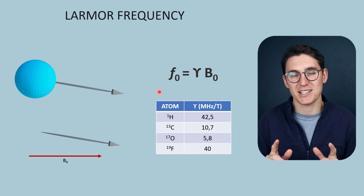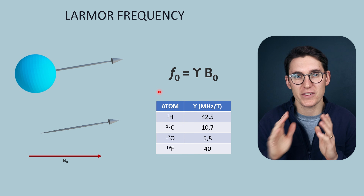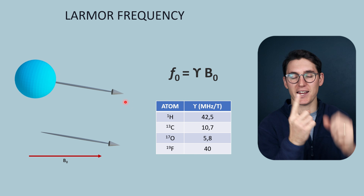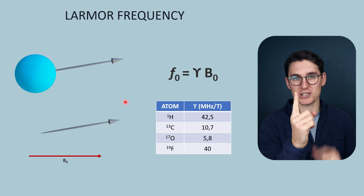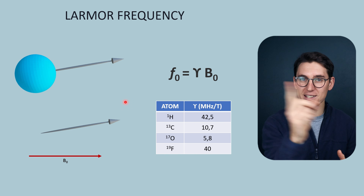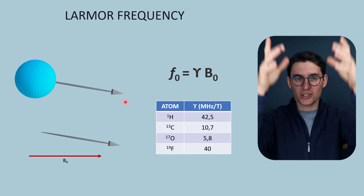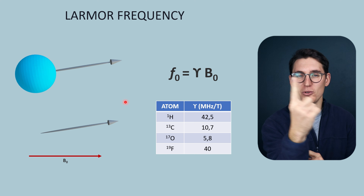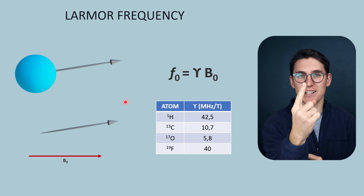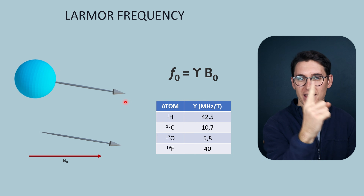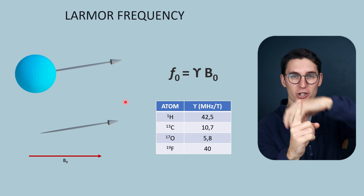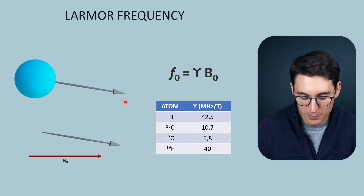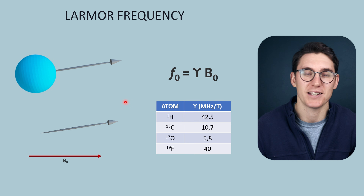What the Larmor frequency is calculating is the precessional frequency of the atom of interest — in our case, hydrogen. Now if you think about spinning a basketball on your finger: if the basketball wasn't spinning, it would just fall off. We need that angular momentum in order for that basketball to stay on our finger as it's pulled down by gravity. When people spin a basketball on their finger, they move their finger from side to side ever so slightly — you can think of that as the precessional frequency. If that basketball were to change — if you made it a tennis ball — your frequency would have to change. The frequency is dependent on the type of atom that is in that magnetic field.